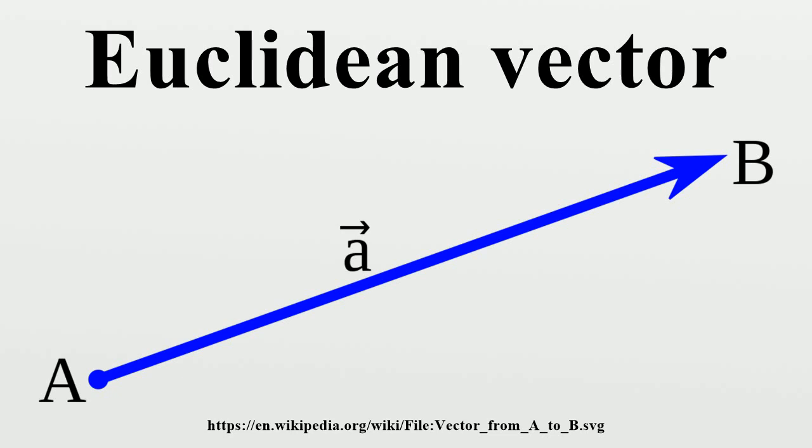The Latin word vector means carrier. It was first used by 18th century astronomers investigating planet rotation around the Sun.